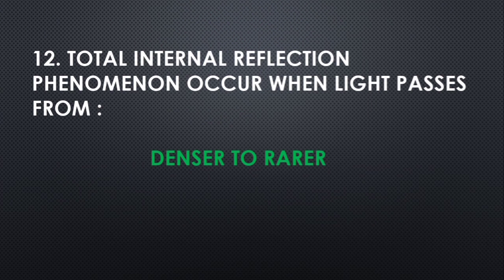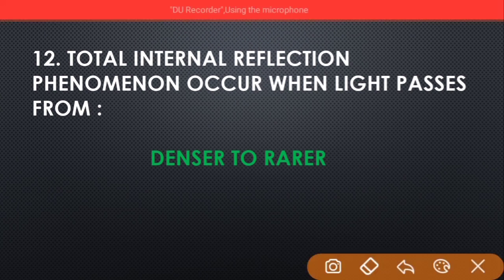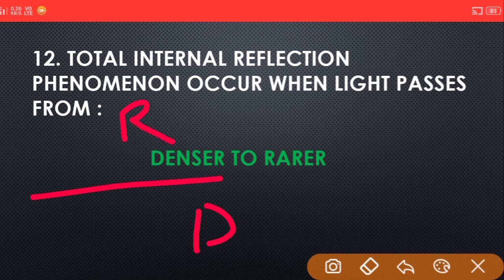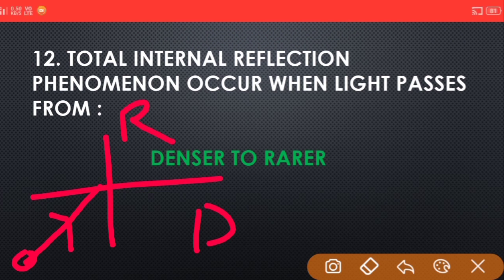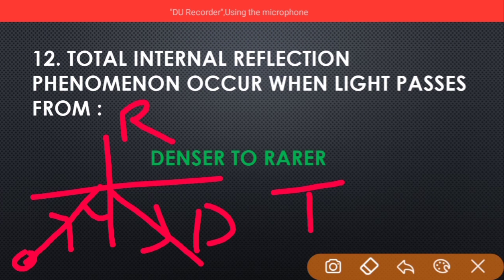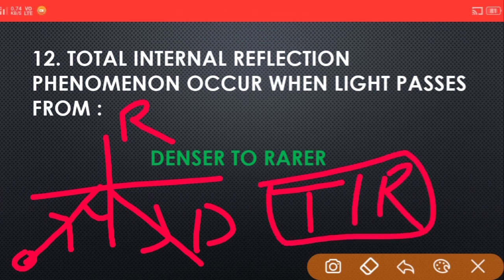The last question: total internal reflection phenomenon occurs when light passes from? Answer: denser to rarer. Light passes from denser medium to rarer medium. When the angle of incidence is greater than the critical angle, the light reflects back into the same medium. This is called total internal reflection phenomena. This happens when the angle of incidence is greater than the critical angle.